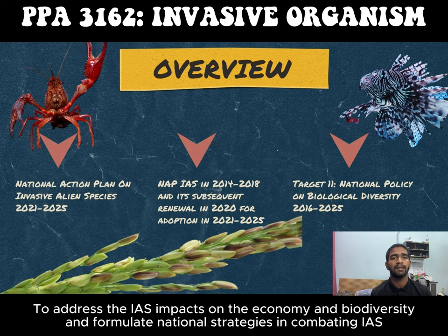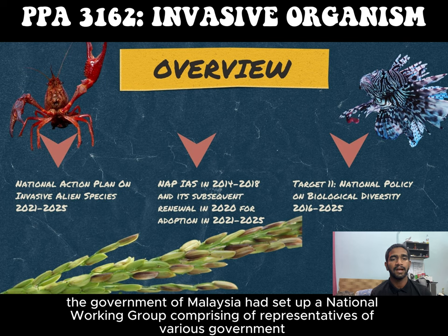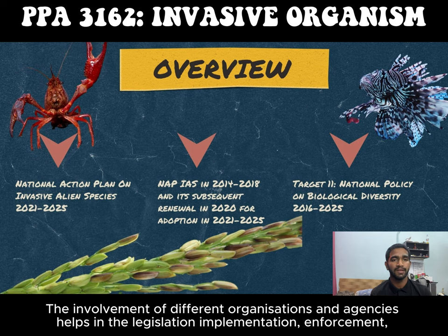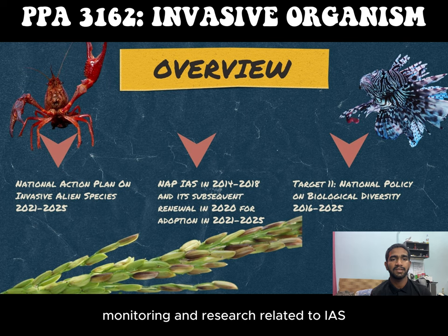Priority species control and measures are in place to prevent their introduction and establishment. To address the invasive species' impact on the economy, biodiversity, and to formulate national strategies in combating invasive species, the Government of Malaysia set up a national working group comprising representatives of various government ministries, departments, agencies, universities, and non-government organizations. The involvement of different organizations and agencies helps in the legislation, implementation, enforcement, monitoring, and research related to invasive species.